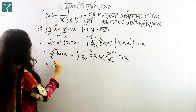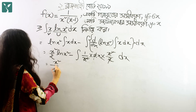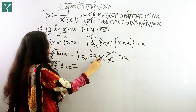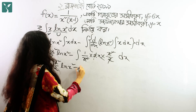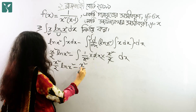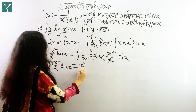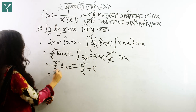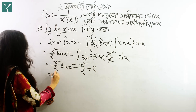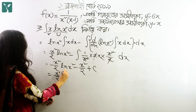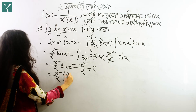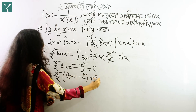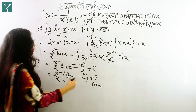We need to write x squared by 2 times ln(x²) minus x squared divided by 2. Here, simplifying the remaining terms, we write x squared by 2 into ln(x²) minus x squared by 2. This is the answer. Thank you.